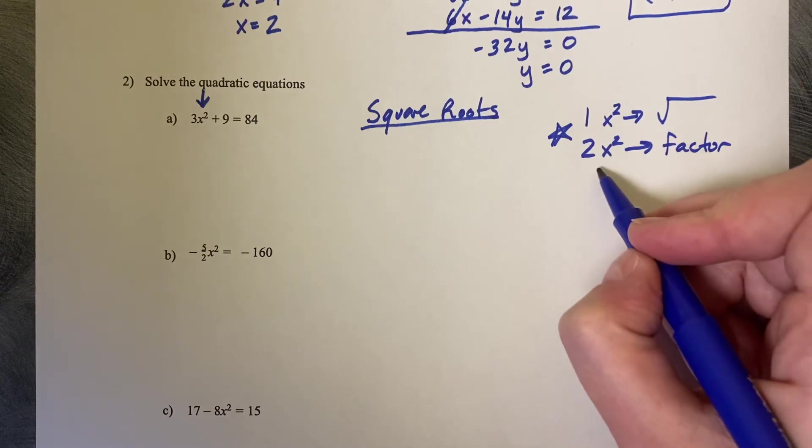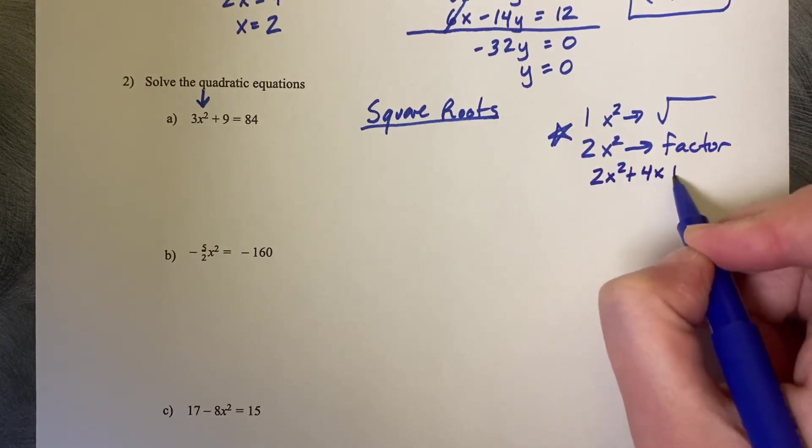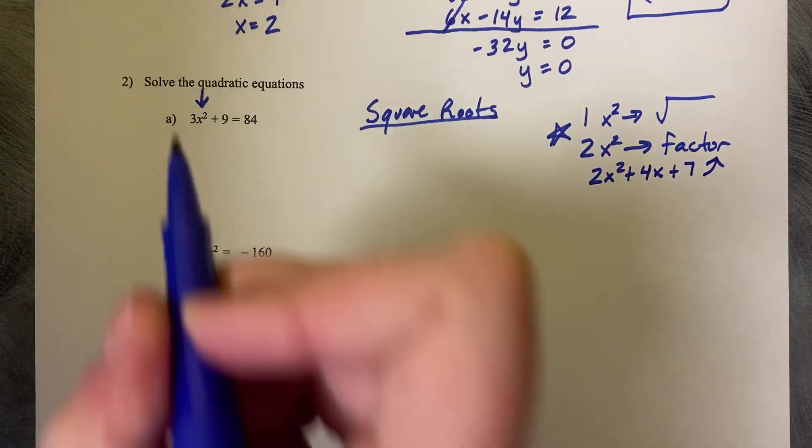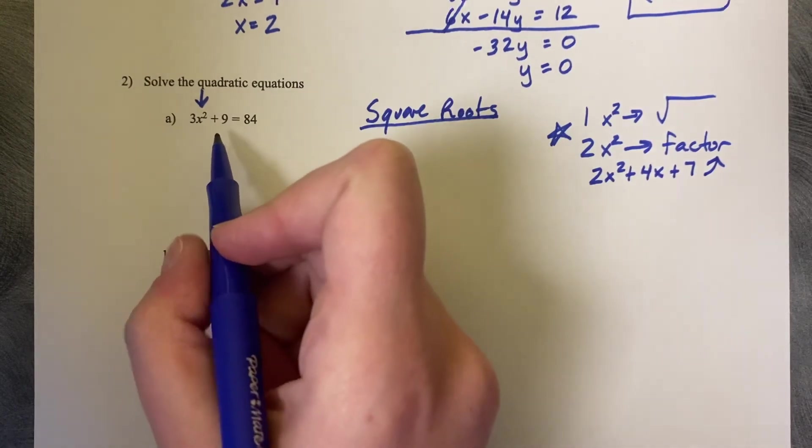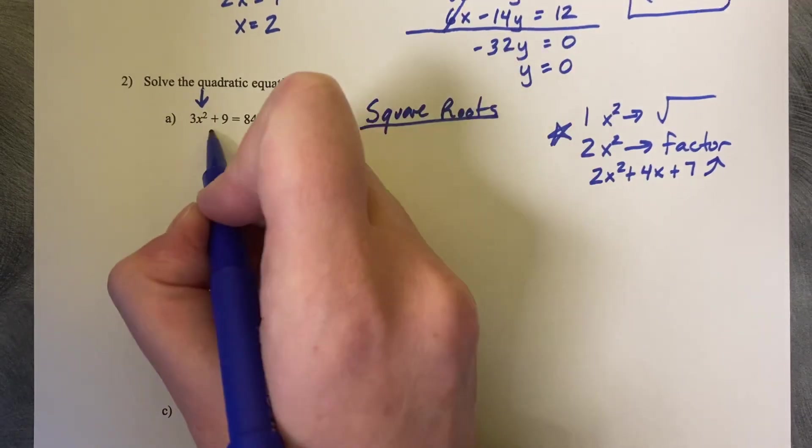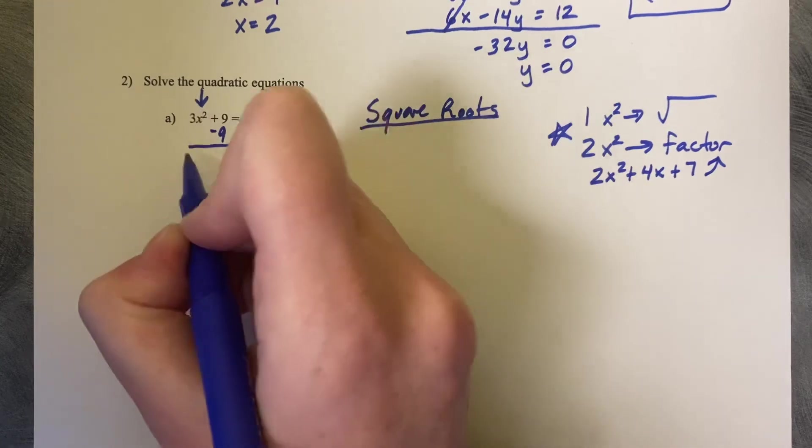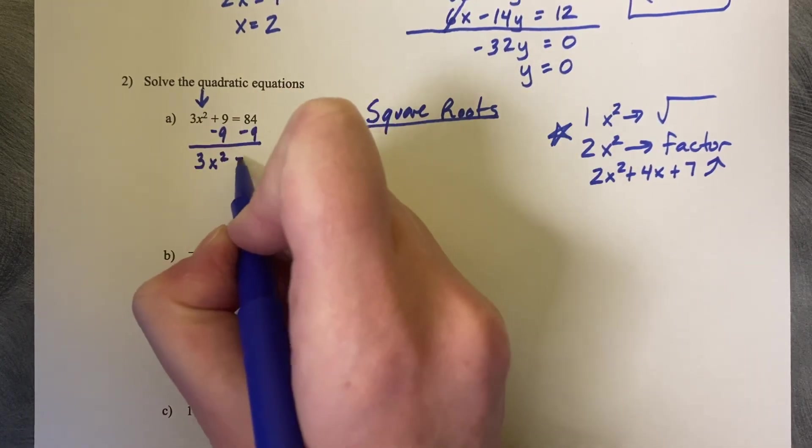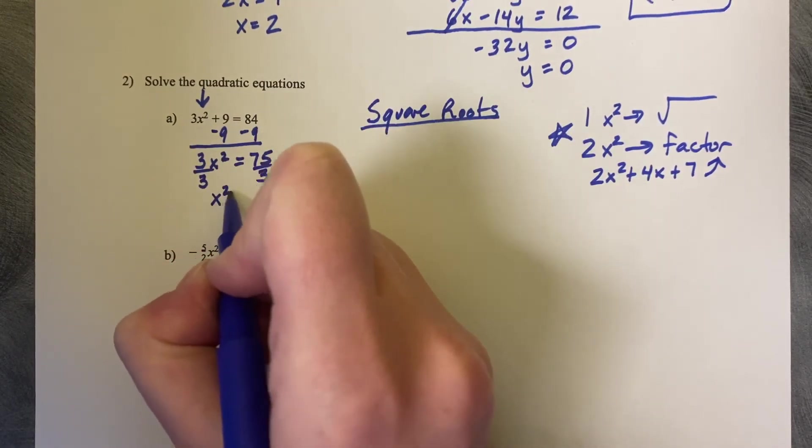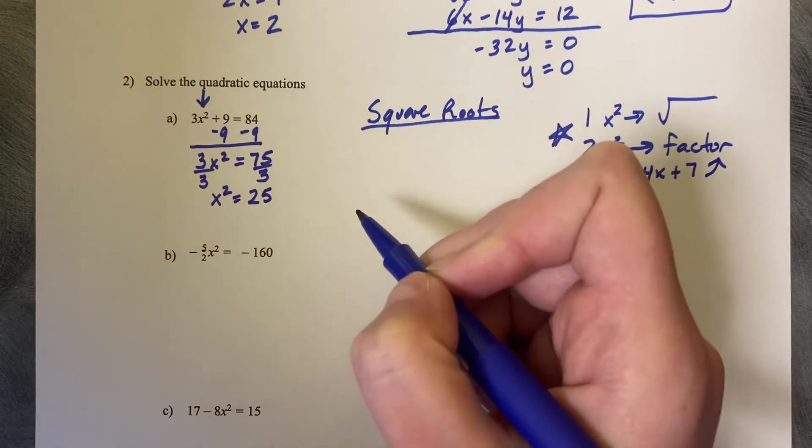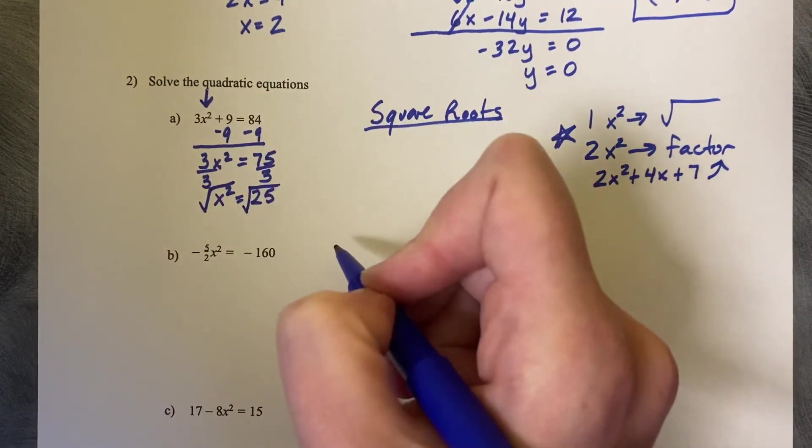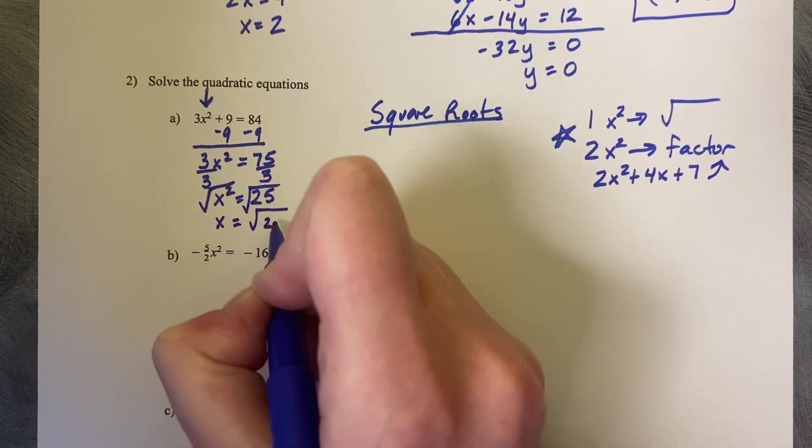So this is how you use square roots. You solve it just like a linear equation. So we're trying to get the x by itself, the single x. So we're going to subtract 9 from both sides. Then we get 3x squared equals 75. Then you can divide by 3. And we get x squared equals 25. And now what's the opposite of a square? A square root. So we take the square root of both sides. And we get x equals the square root of 25.